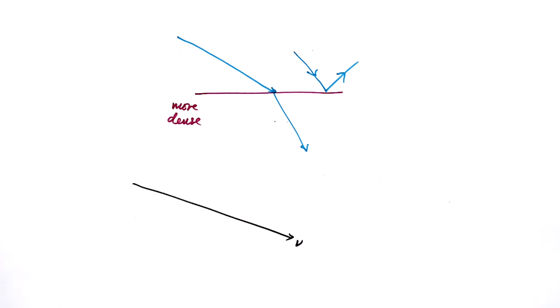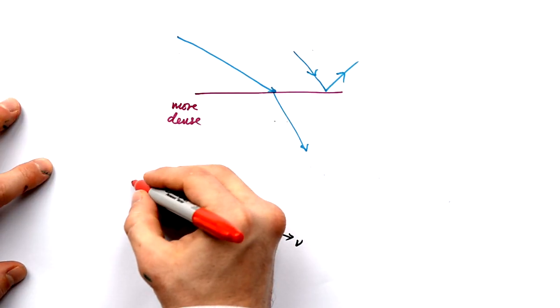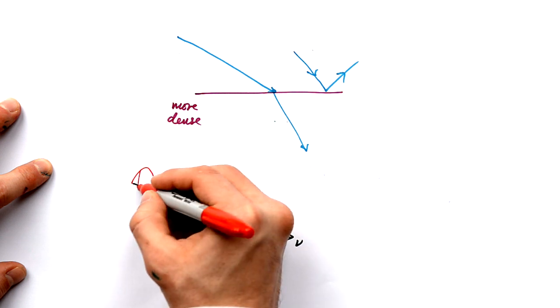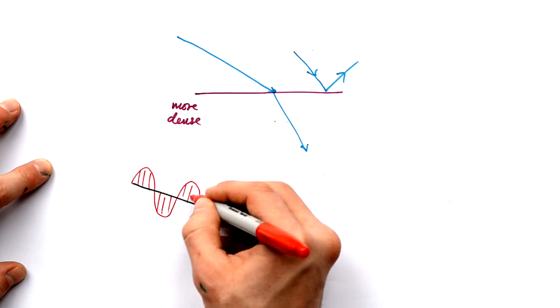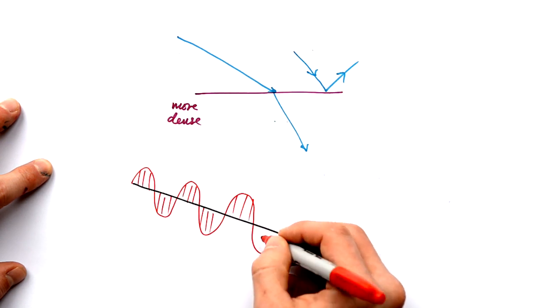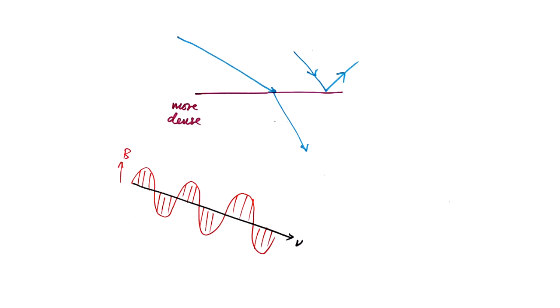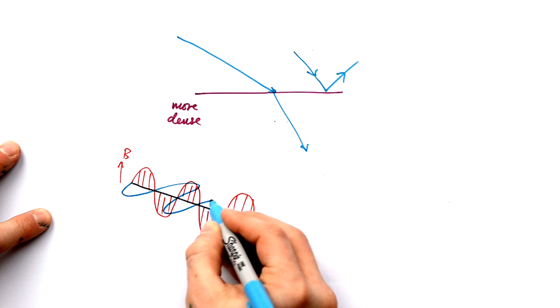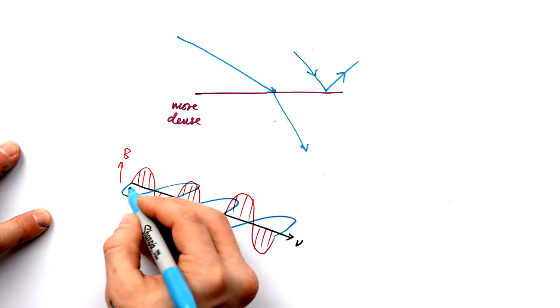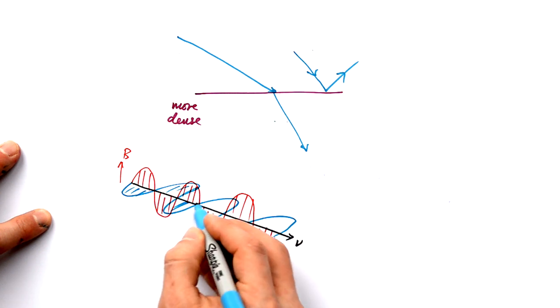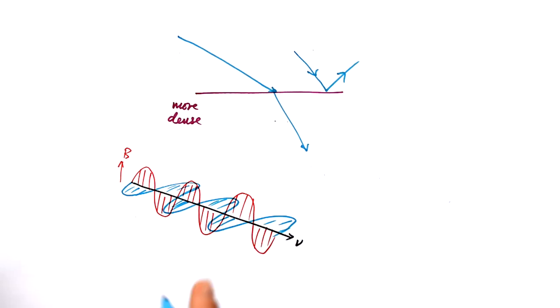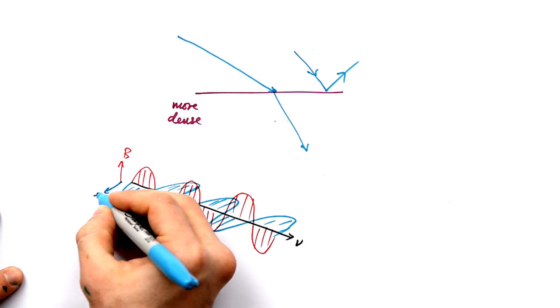He theorized and later proved that light has to be made up of two waves - an oscillating magnetic field and an electric field oscillating perpendicular 90 degrees to each other.